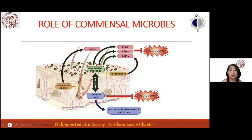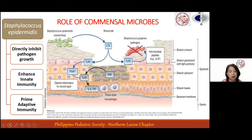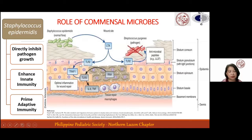Commensal microbes such as Staphylococcus epidermidis contribute to host immunity by inhibiting pathogenic microbe growth. Their presence results in competition for nutrients and space, impacting pathogen growth potential. They enhance innate immunity by activating toll-like receptors, resulting in expression of antimicrobial peptides, and also prime adaptive immunity with the end result of promoting intact skin.